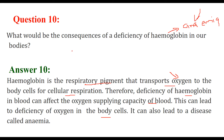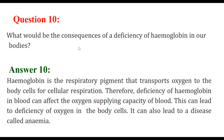The normal hemoglobin range for ladies is 11 to 13, and for men around 14 to 16. The number can vary — this is the range.